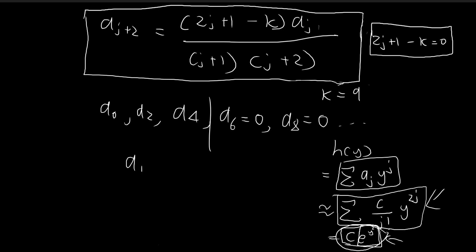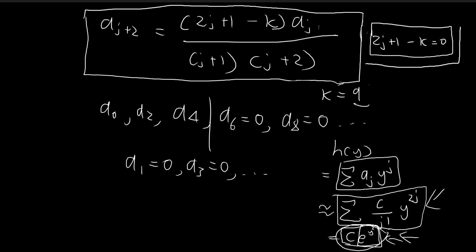We've only considered the even subscripts so far. In order to also chop off the odd terms, the only way is to set a1 equal to 0. If a1 is equal to 0, then a3, a5, a7, and so on are all equal to 0. If we don't set a1 equal to 0, the recursion formula will keep going because for k equal to 9 this term will never be 0 — it will keep generating constants all the way to infinity, and the solution will not be normalizable. This is what it means to require 2j plus 1 minus k equal to 0, so that the recursion formula will stop at some point.